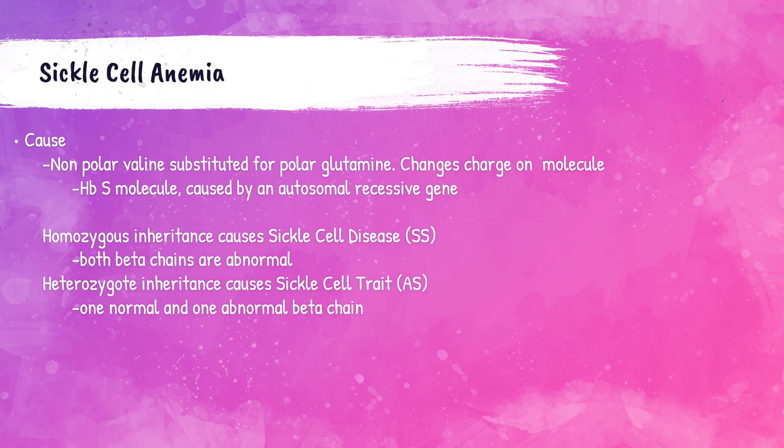Hemoglobin S is caused by an autosomal recessive gene. Sickle cell disease is caused by homozygous inheritance of the hemoglobin S molecule, which results in both beta chains of the hemoglobin molecule being abnormal. Sickle cell trait occurs when there is one normal and one abnormal beta chain from a heterozygous inheritance.